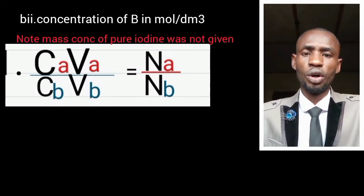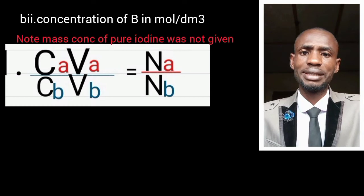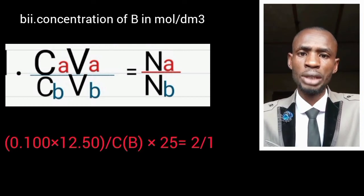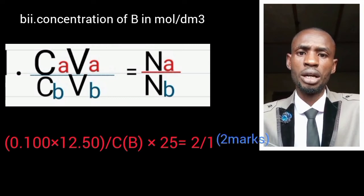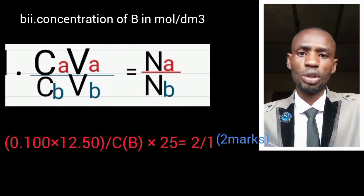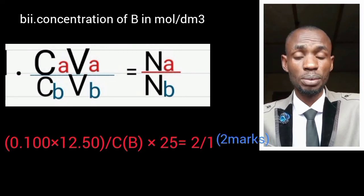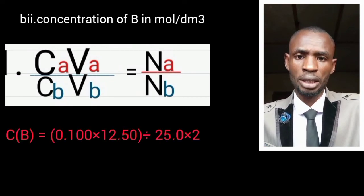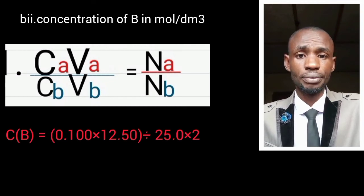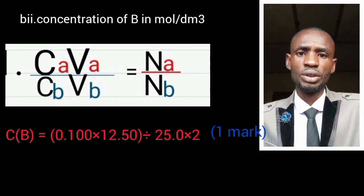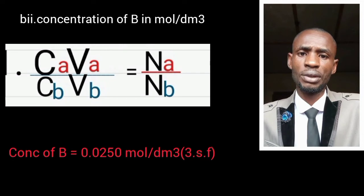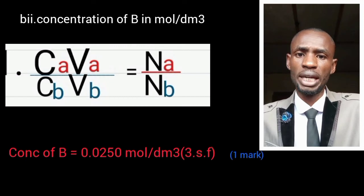If you do correct substitution of those parameters into the formula, you earn one mark. You must show the mole ratio — that earns another mark, making two marks there. Next, make CB the subject of the formula, and that also earns one mark. Note that you are calculating molarity in mol per dm³. Your final answer must be in three significant figures, and you must use correct units.